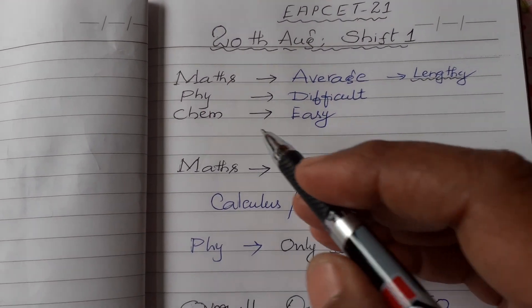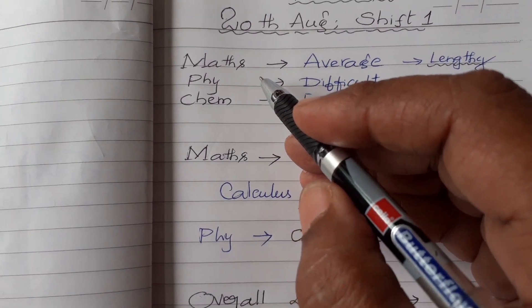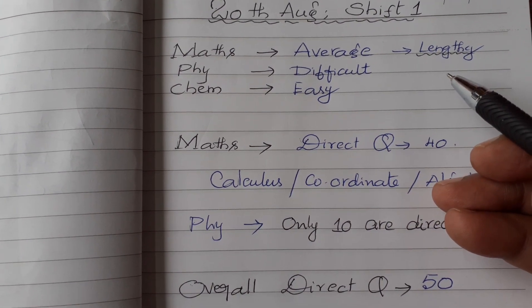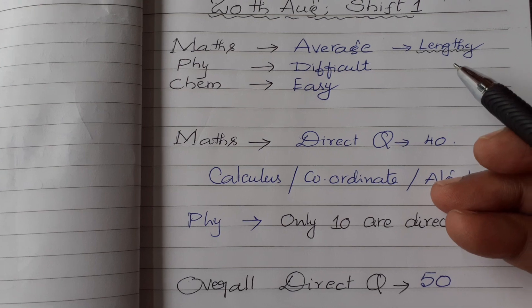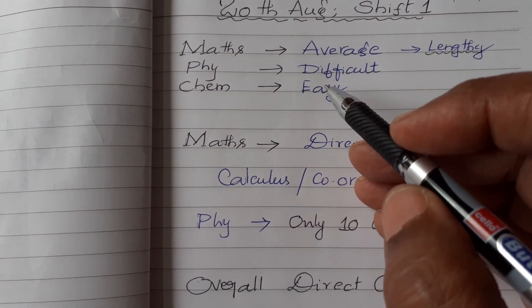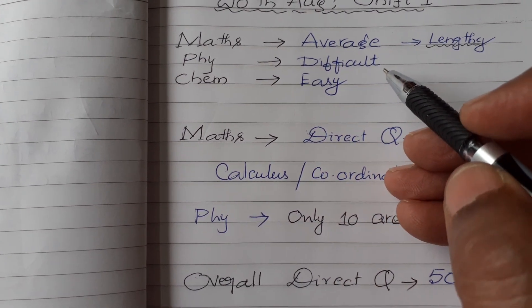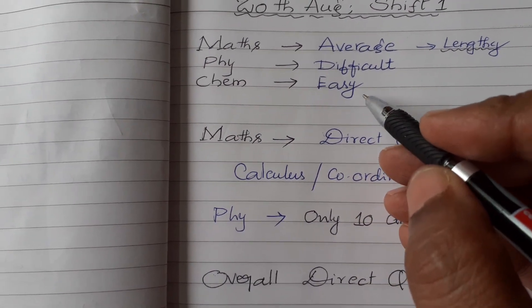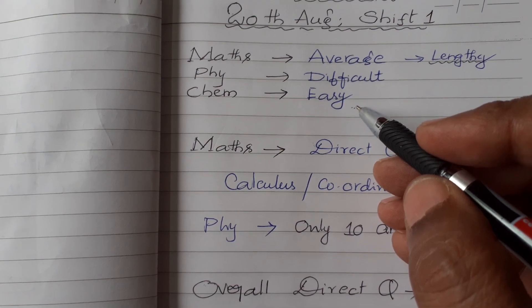So first of all, mathematics paper as usual is average, lengthy and very time consuming questions are given. Physics is also as usual difficult. Yesterday also it was difficult in both sessions. Chemistry is easy, so better you concentrate on chemistry.